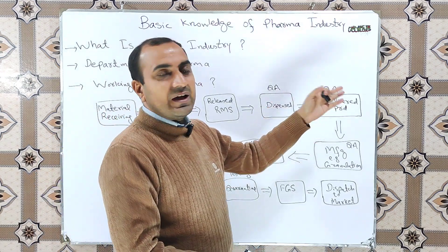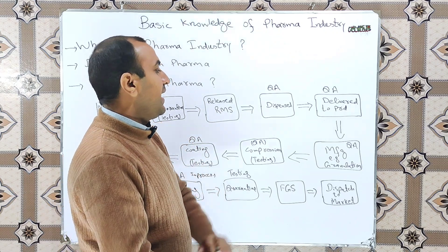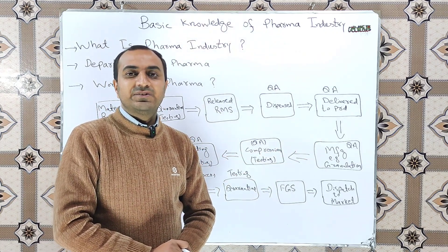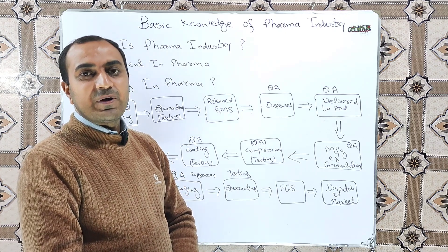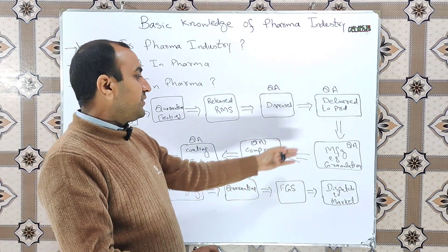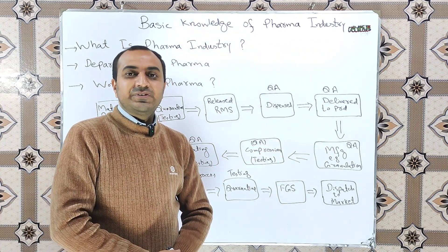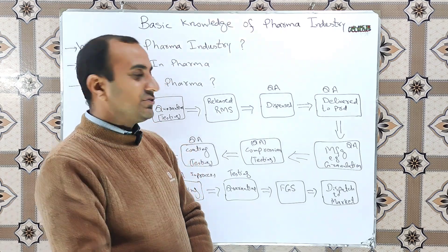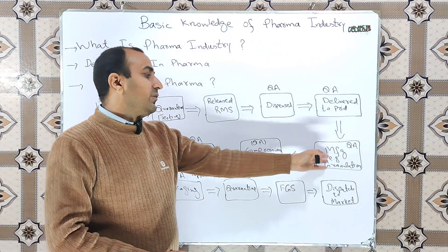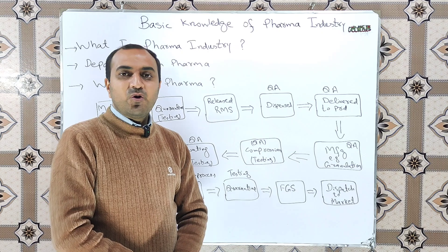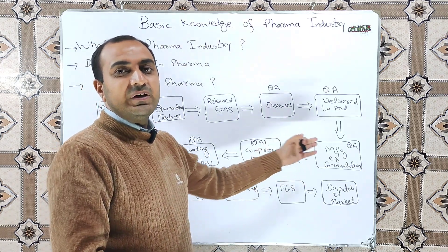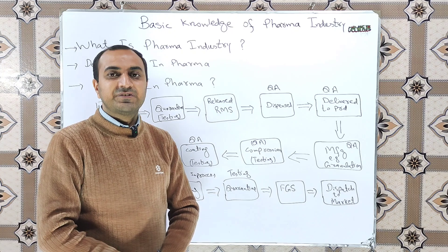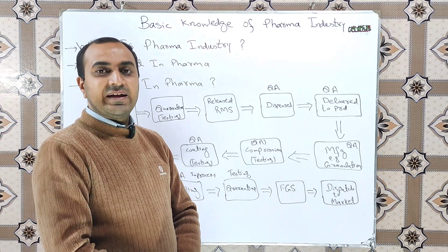After dispensing, the materials are delivered to the production department, and quality assurance also supervises this activity. Manufacturing activities are then performed by the production department, with various in-process checks and line clearances conducted. Taking the example of tablet manufacturing, we start from granulation, where QA performs necessary checks such as line clearance, LOD, and initial and final weight checks.